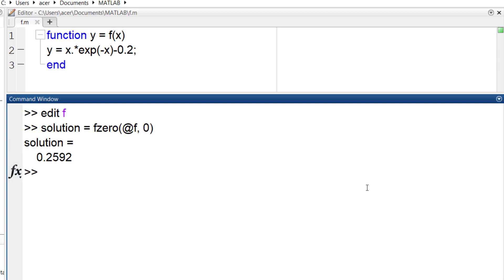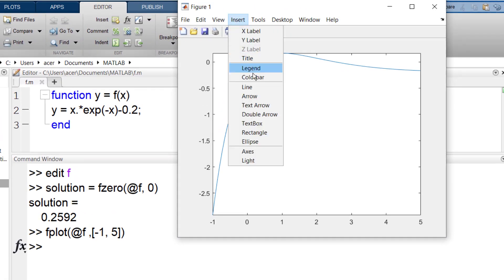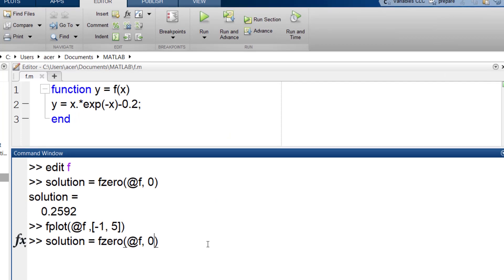I plot the function and I see that this equation has two answers. If I change the initial guess I will get the other one.